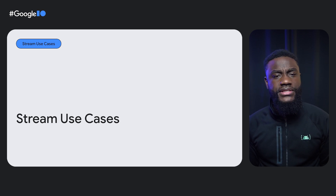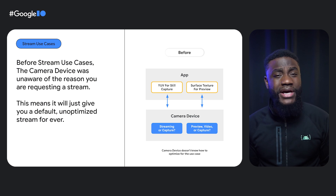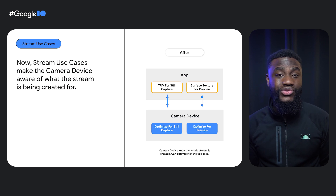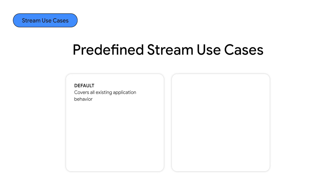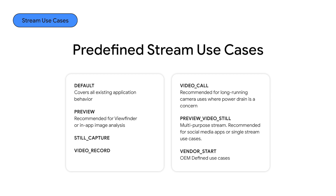Next, let's talk about stream use cases. Before stream use cases, the camera device was unaware of the reason you are requesting a stream, meaning it would give you the default unoptimized stream. Now, with stream use cases, the stream is tagged and will let the camera device know why the stream is being created. Here is a list of supported stream use cases: Default, which covers all existing behavior; Preview, recommended for viewfinder or in-app image analysis; Still Capture and Video Record; Video Call, recommended for long-running camera use where power drain is a concern; and Preview Video Still, a multi-purpose stream recommended for social media apps or single stream use cases.